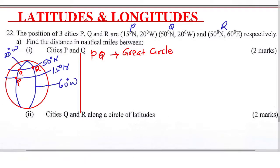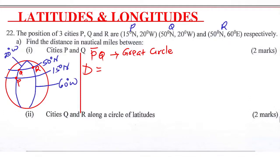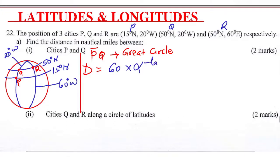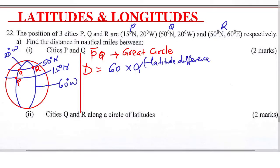P and Q are lying on the same longitude but different latitudes. Now, how do you get distance along the meridian? This one is required to be given in nautical miles. The distance formula is: we take 60 multiplied by alpha, where alpha is the latitude difference.